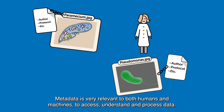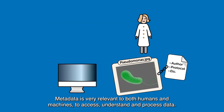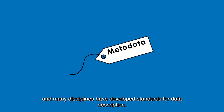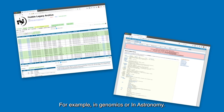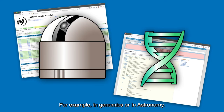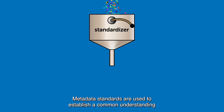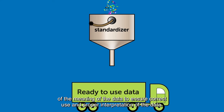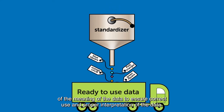Metadata is very relevant to both humans and machines to access, understand, and process data. Researchers have always worked with metadata and many disciplines have developed standards for data description, for example, in genomics or in astronomy. Metadata standards are used to establish a common understanding of the meaning of the data to ensure correct use and proper interpretation of the data.